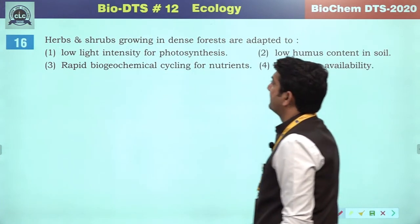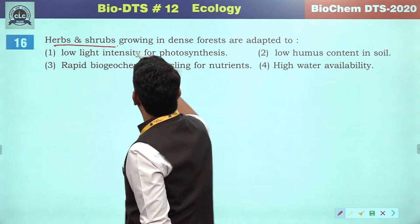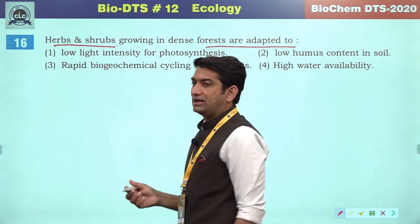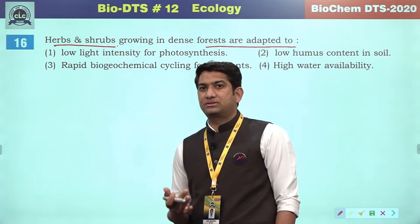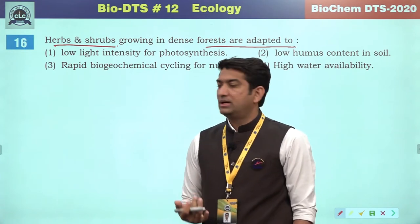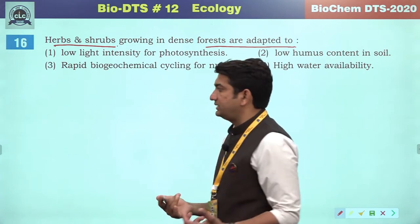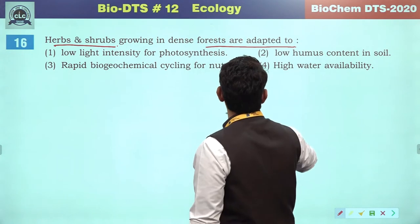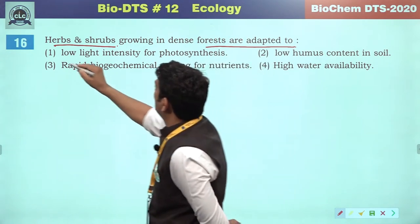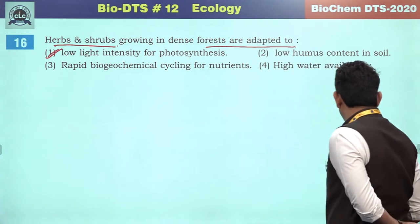Herbs and shrubs growing in dense forest at the bottom are adapted to low light intensity to make their photosynthetic productivity. So the correct answer will be low light intensity for photosynthesis.